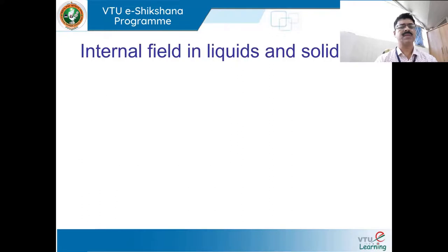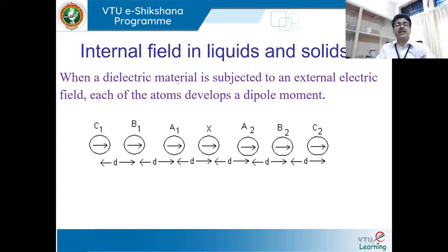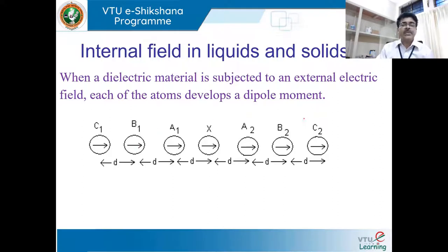Using these concepts, let us try to understand the internal field in liquids and solids. To understand the internal field, let me take an example. Consider a dielectric material subjected to an external electric field. Every atom or molecule develops a certain amount of dipole moment. Let us consider the dipoles are all along a single direction — one-dimensional axis. So we take a dipole at position x, which is an atom or molecule. Due to the electric field, the material shows some amount of dipole moment.